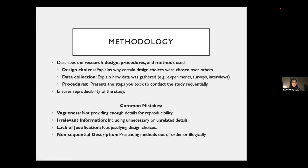Common mistakes in the methods section — even though it seems straightforward — really include not providing enough details for reproducibility, so having very vague methods. Another is providing irrelevant information that's not really related to the methods. Lack of justification is a big one; when you're not justifying your design choices, reviewers are going to ask for that. And then a non-sequential description of your procedure — presenting your methods out of order — makes it really difficult for the reviewer to follow. I would recommend structuring your methods with subheadings, like in the paper I showed, because that usually helps to keep things organized.